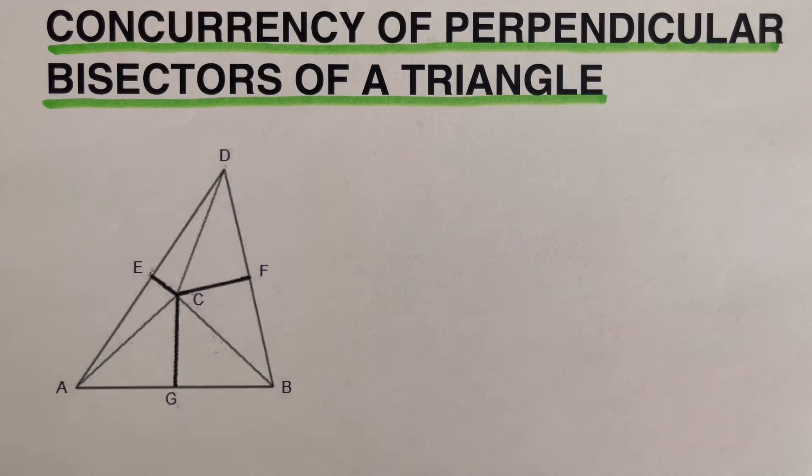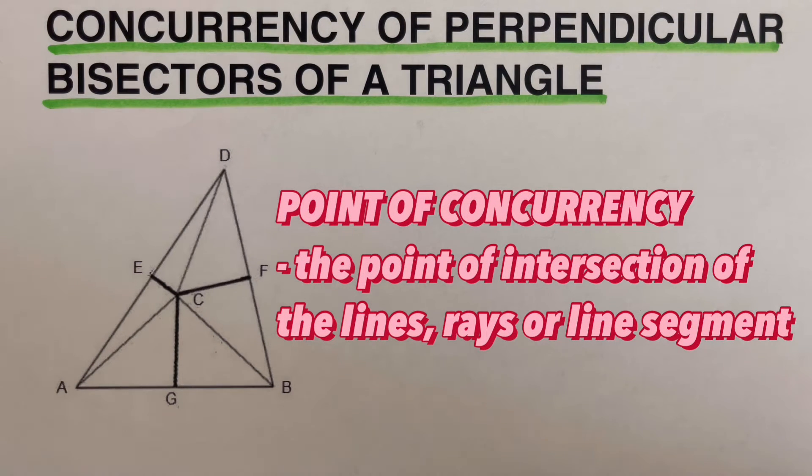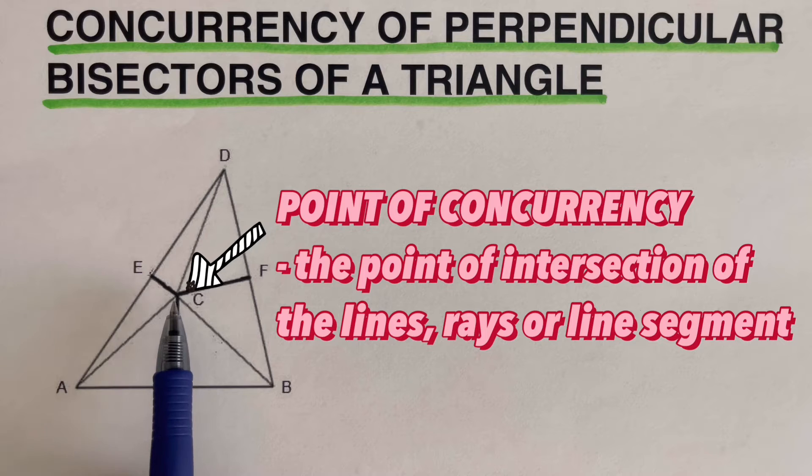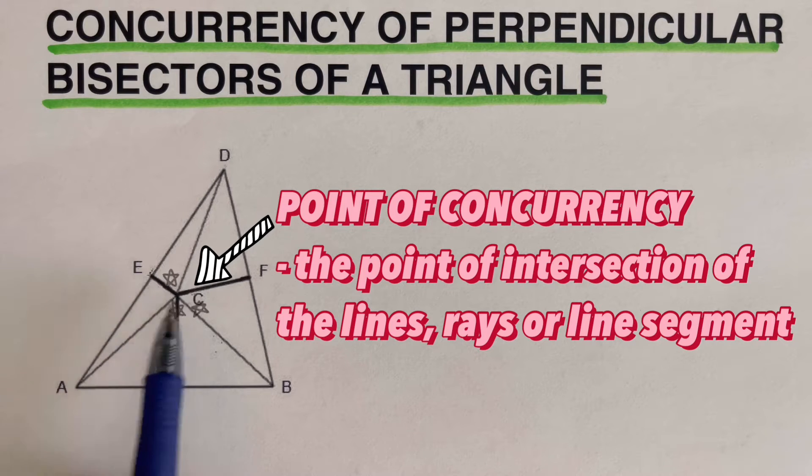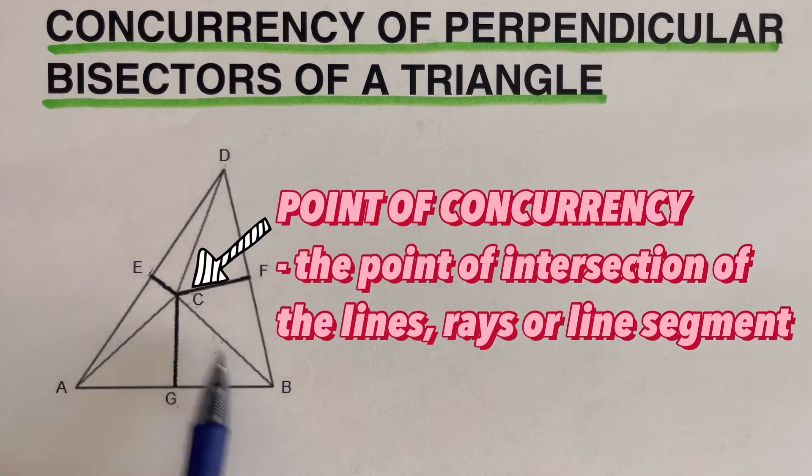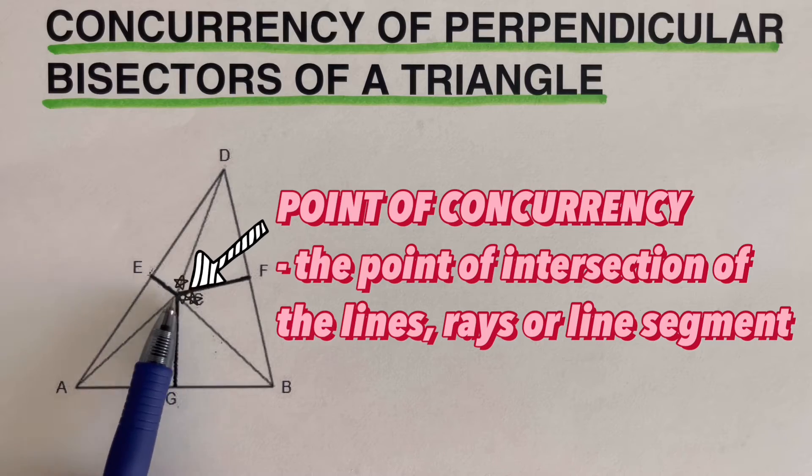We remember that point of concurrency is defined as the point of intersection of the lines, rays, or line segments. So in this case right here, this is the point of concurrency because all of these line segments are touching this point right here.